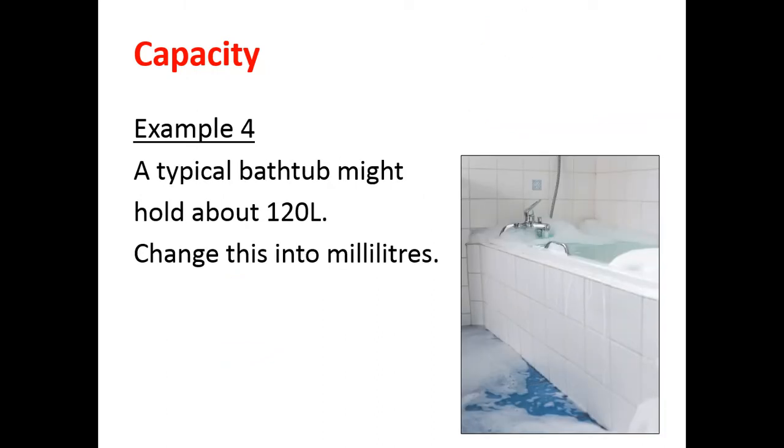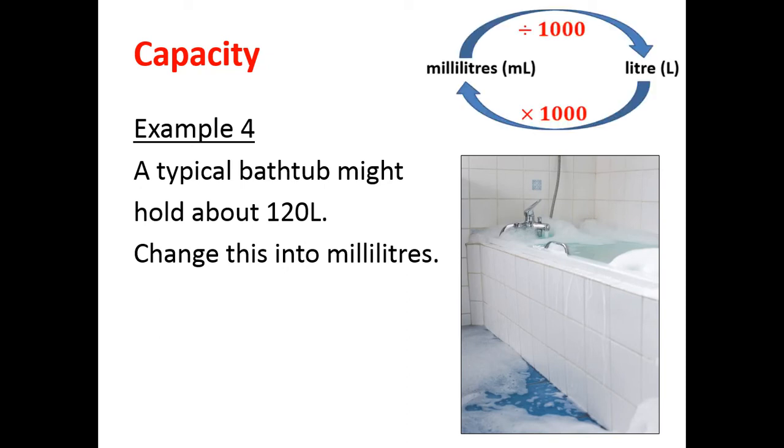Example 4. A typical bathtub might hold about 120 litres. We need to change this into milliliters. Another look at our diagram. We're changing litres back into milliliters, so we need to multiply by 1,000. So 120 times 1,000 makes 120,000 milliliters, or 120,000 mils.